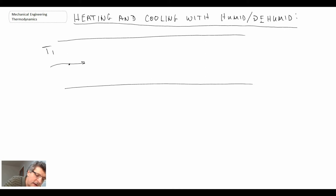Air is coming in at temperature 1, specific humidity 1, relative humidity 1, and then we have our heating or cooling coil. So this could be Q dot in or Q dot out, and that takes us to an intermediate state, state 2.